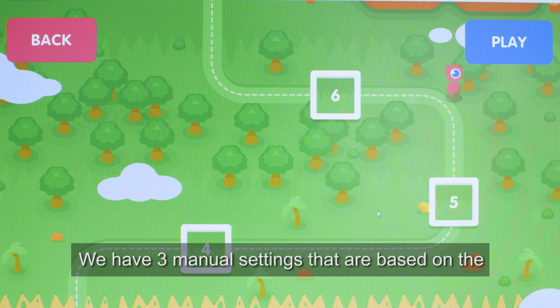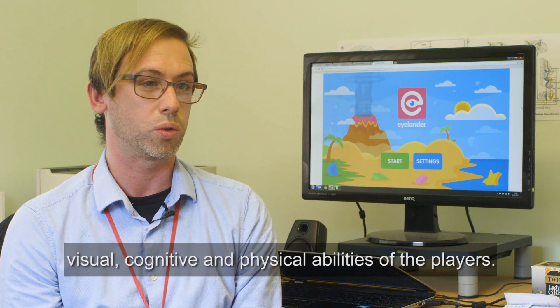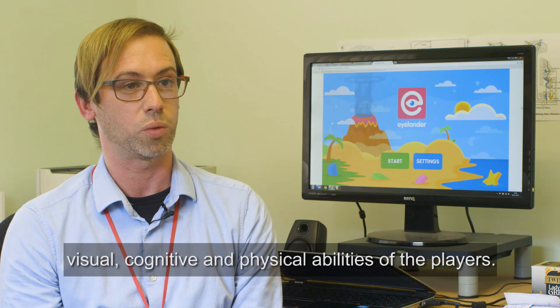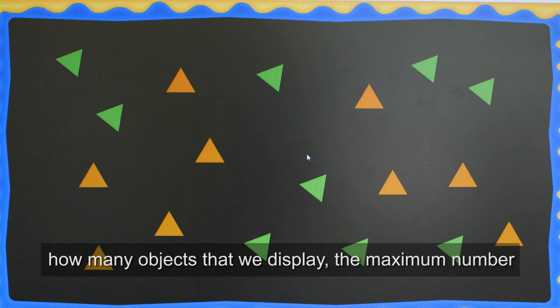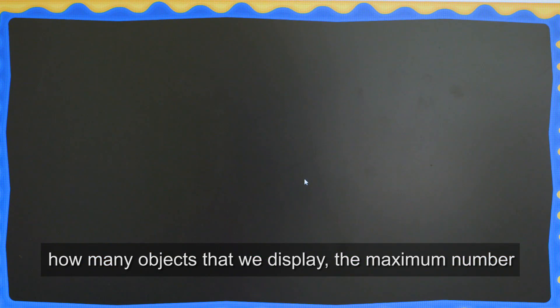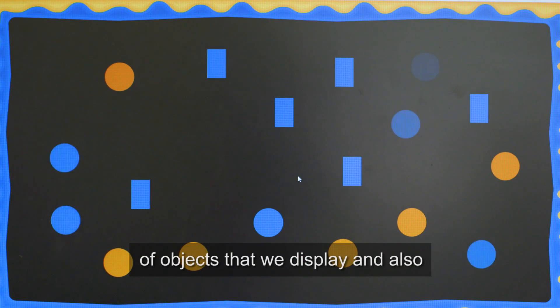We have three manual settings based on the visual, cognitive, and physical abilities of the players. These are the size of the objects on the screen, how many objects we display, and also the maximum amount of time they can respond in.